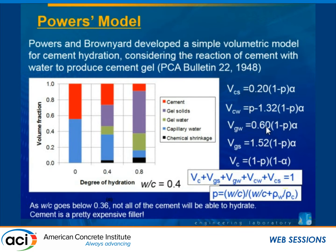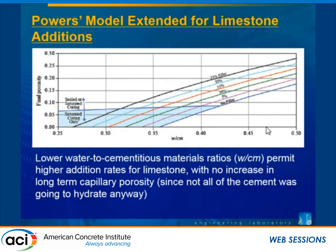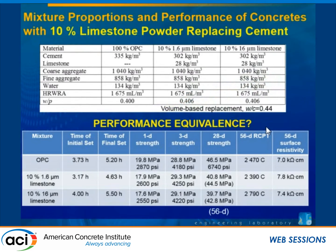Cement is expensive while limestone comparatively is not. Extending the Powers model for limestone systems, we see that at lower water-to-cementitious materials ratios, the more cement we can replace with limestone without changing the capillary porosity very much. Our objective is to produce concretes with equivalent performance to OPC concretes. For this first set of studies, we did a 10% replacement by volume of cement with limestone, maintaining the same aggregate and water contents.